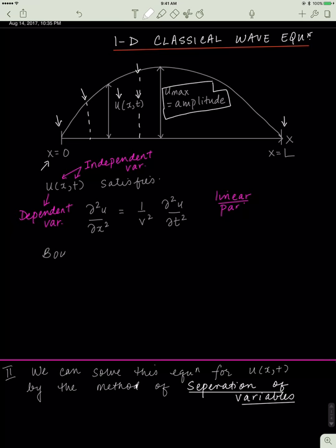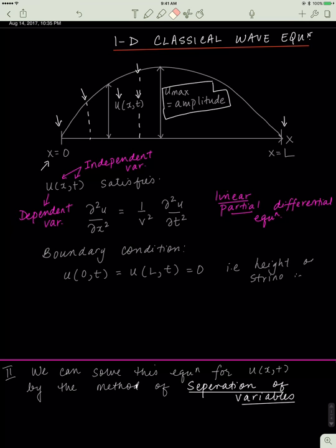It turns out that u(x, t) satisfies some sort of differential equation. It's really not important for us to understand where this equation comes from — you're all taking quantum chemistry, so we'll try to keep derivations to a minimum. All we need to know is that the height of this wave, or this string, satisfies this linear partial differential equation.